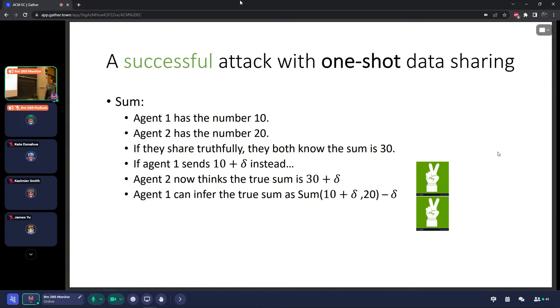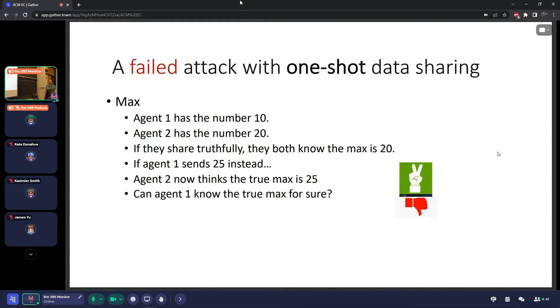Agent one has a number 10, agent two has number 20. If they share it together, it's 30 together. But agent one has a very simple deviation. It sends some 10 plus delta, and it's very easy to reverse it. You just subtract delta from the end result. And it managed to make the other agent think the result is 30 plus delta, but by itself, it knows that it's 30.